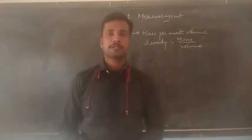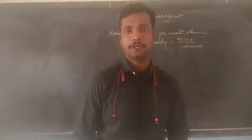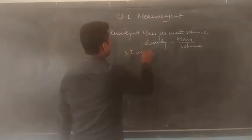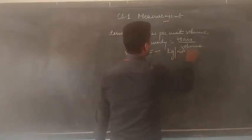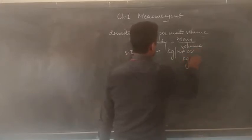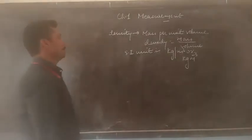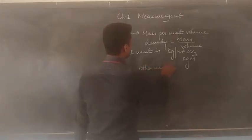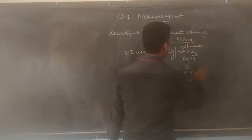Now you should also know that density has units. The SI unit is kg per meter cube, which can also be written as kg·m⁻³. We have another unit called the CGS unit, which is gram per centimeter cube, or g·cm⁻³.